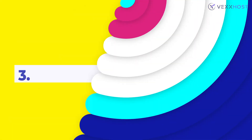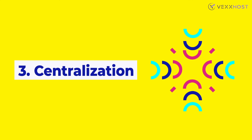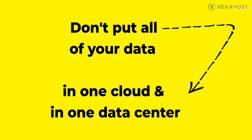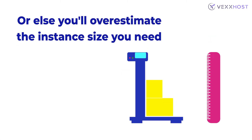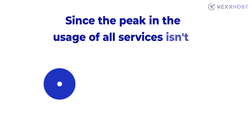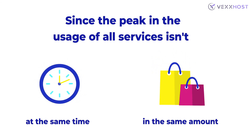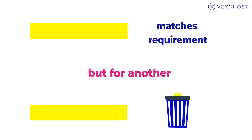Centralization. When it comes to cloud computing, companies tend to put all of their eggs in one basket by putting all of their data in one public or private cloud and at one data center too. Therefore, they get resources in bulk by overestimating the instance size they need. Since the peak in the usage of all services does not occur at the same time, nor in the same amount, a big boost may match the requirement for one service while it may lead to waste in several others.